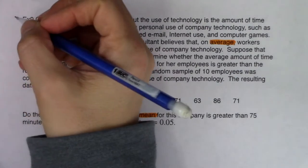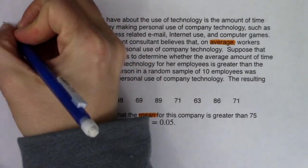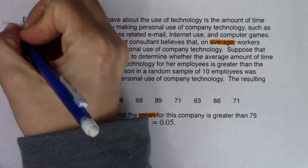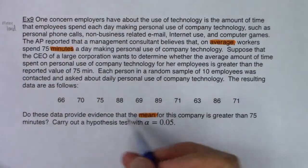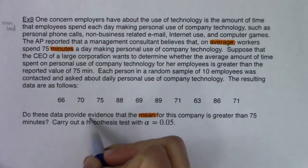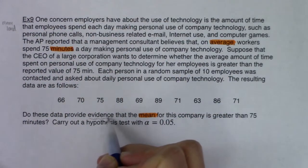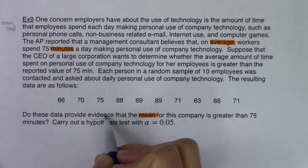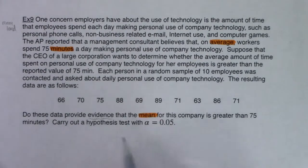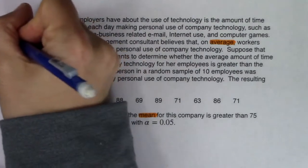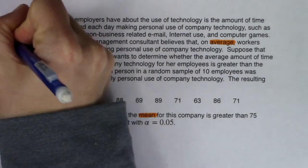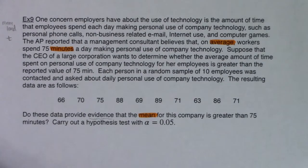I'm going to make some notes: I'm in mean land. I also saw the word 'evidence' — as soon as I see evidence, I know I'm going to run a hypothesis test. And they straight out told me, carry out a hypothesis test. If I'm running a hypothesis test in mean land, I know I'm going to be doing a t-test. In mean land, you're always on the t-distribution.